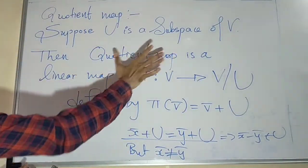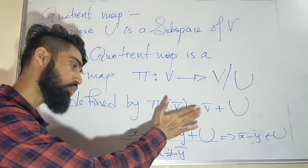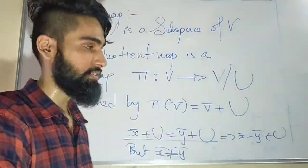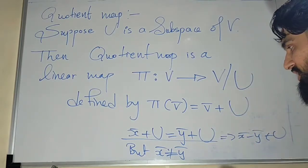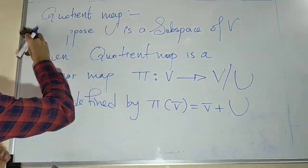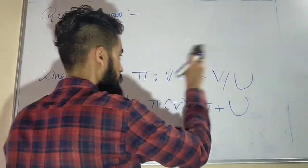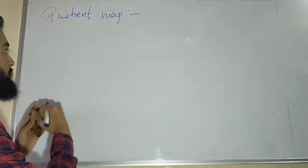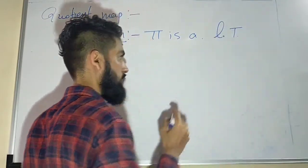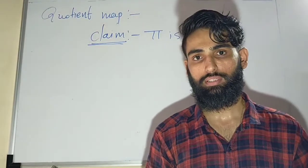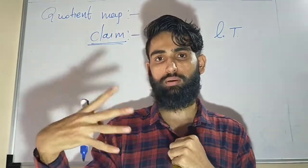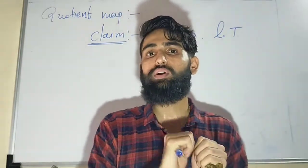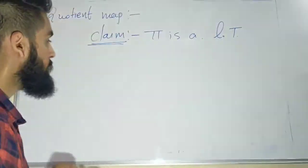So while defining the quotient map, we say it is a linear map. We know the definition, and we know it is well defined. Now we will prove it is a linear transformation. A linear transformation is a map from one vector space to another such that T of alpha x plus y equals alpha T of x plus T of y. So what our claim is: the pi we defined just now is a linear transformation, and we will prove this.